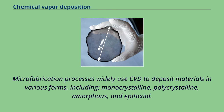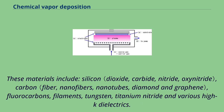Microfabrication processes widely use CVD to deposit materials in various forms, including monocrystalline, polycrystalline, amorphous, and epitaxial. These materials include silicon, carbon, fluorocarbons, filaments, tungsten, titanium nitride, and various high-K dielectrics.